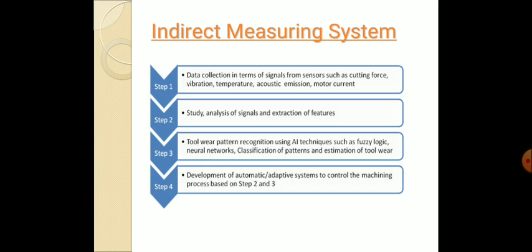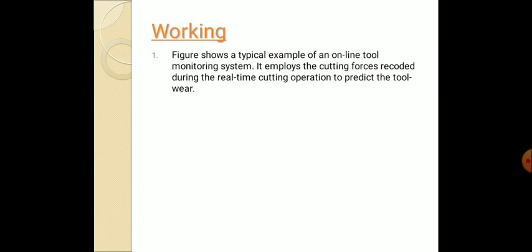In step three the tool wear pattern recognition is done by the AI techniques. This AI technique is artificial intelligent techniques which uses such as a fuzzy logic, the neural networks, then it is passed to the last that is step four: development of the adaptive system for controlling the machining process. This is the working of the indirect measuring system.